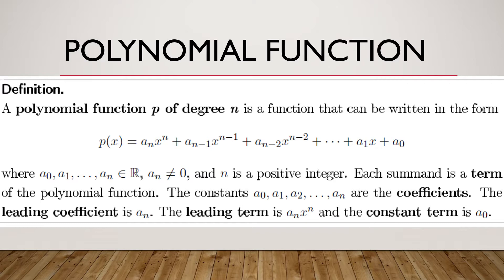So the constants, we have here the constants a_0, a_1, a_2 up to a_n. As I have said, we are doing numerical coefficients and a_n here is what we call the leading coefficient. While this a_n x^n is called the leading term and the last term is called the constant term.